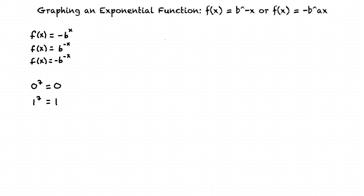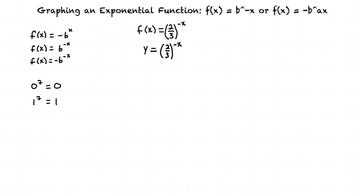To start graphing exponential functions, we pick an x value and then substitute it into the function to find the corresponding y values. We can then plot the points we have solved for. Let's start with the example: graph the exponential function f of x equals 2 thirds to the negative x. We will substitute y for f of x. Let's start by plotting points on the graph with x values negative 2, negative 1, 0, 1, and 2. To help us, we can make a table of our x and corresponding y values.